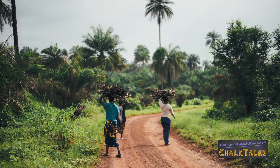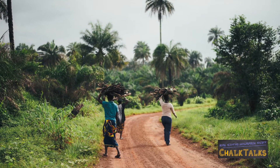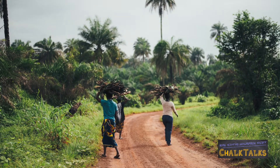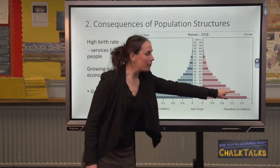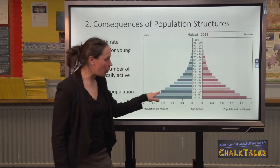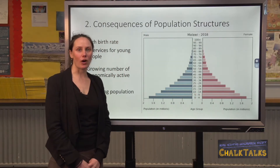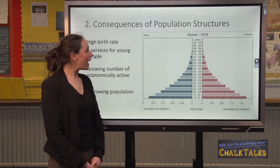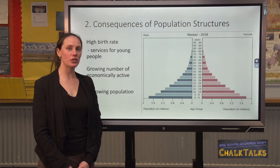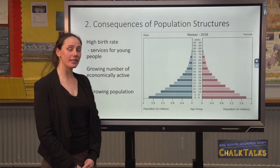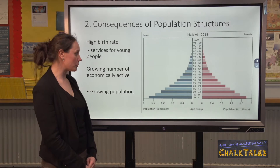Another aspect of population you will need to explain is the consequences of different population structures. Population structures are different in developing and developed countries. Looking at Malawi, a developing country in West Africa, its population pyramid has a wide base, meaning it has a high birth rate and a large number of young people. As a consequence, the government will have to put a lot of money into services for young people, including immunisation programmes, education and maternity hospitals.